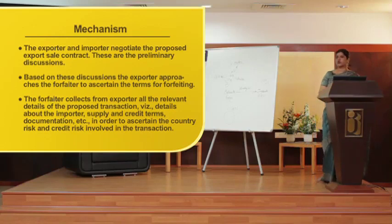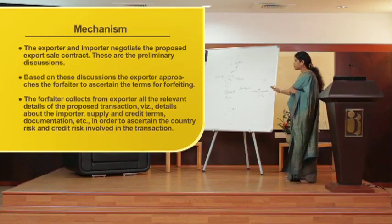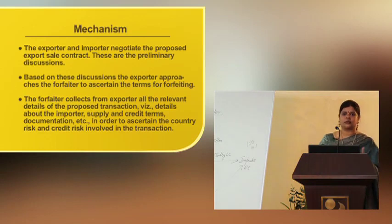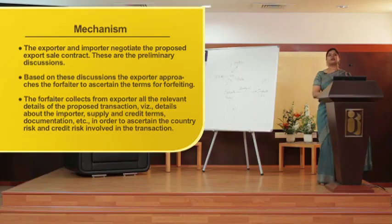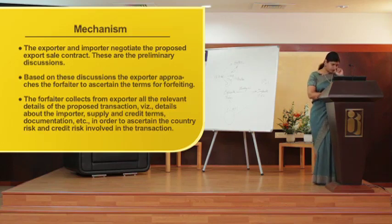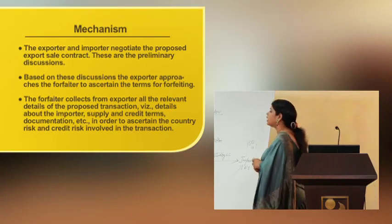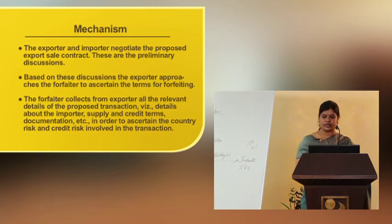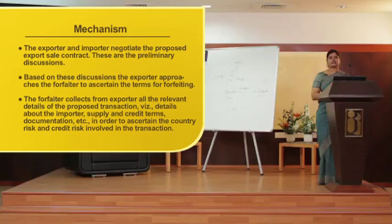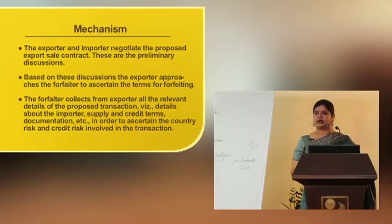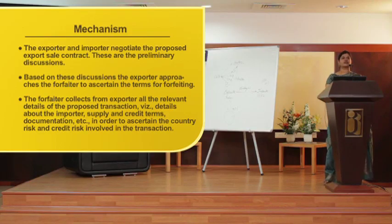The forfeiter collects from the exporter all the relevant details of the proposed transaction — details about the importer, the supply and credit terms, what credit term has been offered by the exporter to the importer, and the documentations to be collected in order to ascertain the country risk and the credit risk involved in the transaction. As it is an export-import transaction, two countries are involved, and that is why the risk exposure intensifies — country risk, currency risk — making the forfeiter's risk exposure pretty huge.